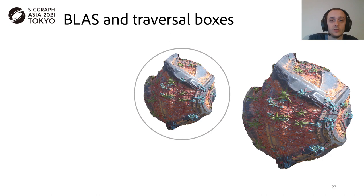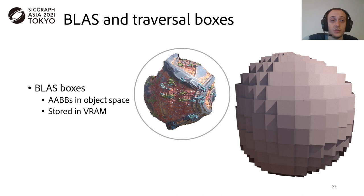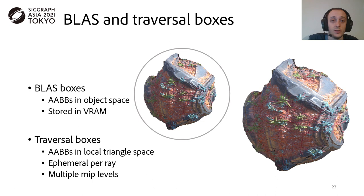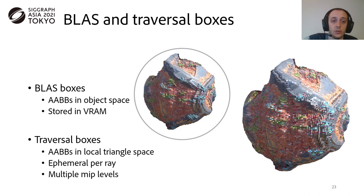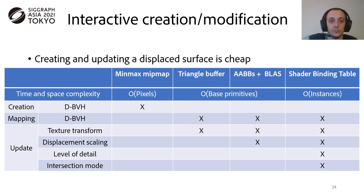Let's take a look at what the BLAS and traversal boxes look in practice. Here is the final render of a displaced surface on the right, with a zoom out on the left that will serve as a reference. The BLAS boxes, shown here, are axis-aligned bounding boxes in object space, and each box represents bounds associated to one single displaced base triangle. These boxes need to be stored in memory. On the contrary, the traversal boxes are axis-aligned boxes in a local triangle space. They are ephemeral and generated on a per-ray basis. They represent the bound associated to a single texel at multiple mip levels.